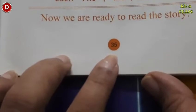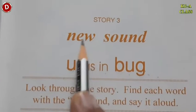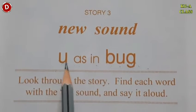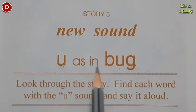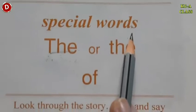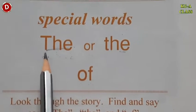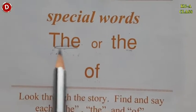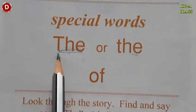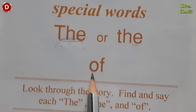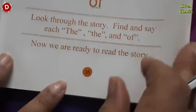Now we come to page number 35. Story 3, new sound — U says 'a', as in B-A-G — bug. Now children, the special words: T-H-E — 'the'. This is a sight word. We will not use phonic sound while reading this word. T-H-E — the. And O-F — of. It is also a sight word.